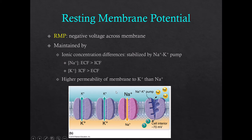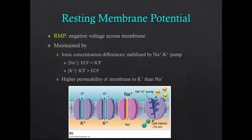Outside the cell we have a higher concentration of sodium than inside. Inside the cell we have a higher concentration of potassium than outside. So both ions are going to diffuse down their concentration gradients, which means sodium will diffuse in and potassium will diffuse out — until we reach an equilibrium with equal concentrations across the membrane. At that point we would no longer have a resting membrane potential, and thus no ability to conduct action potentials, which would be very damaging to our body.